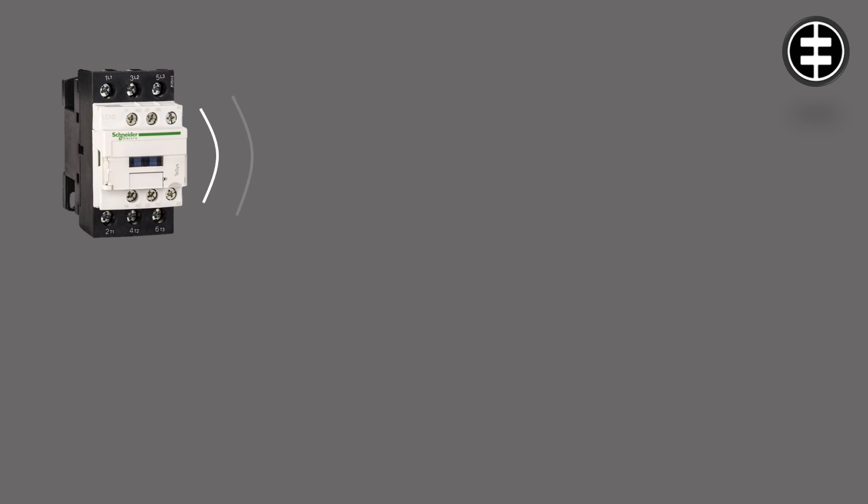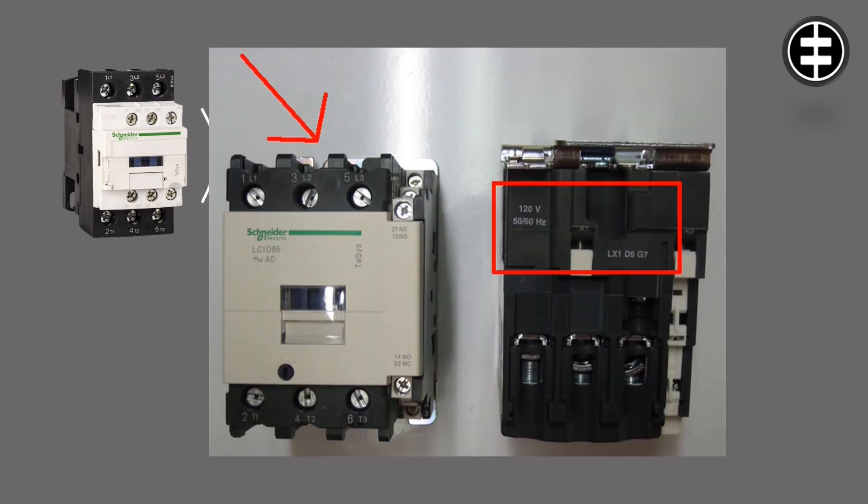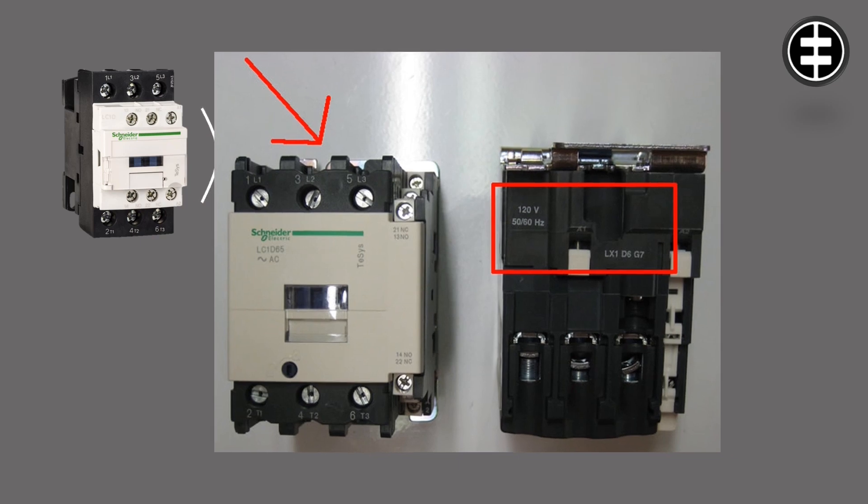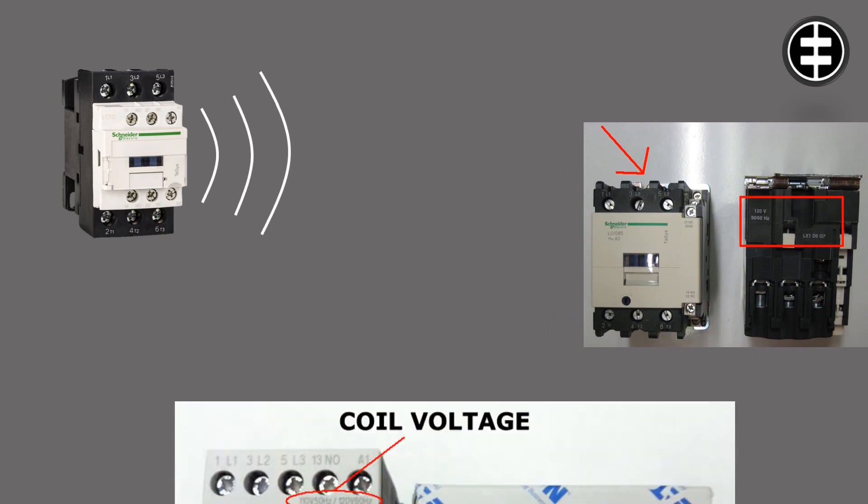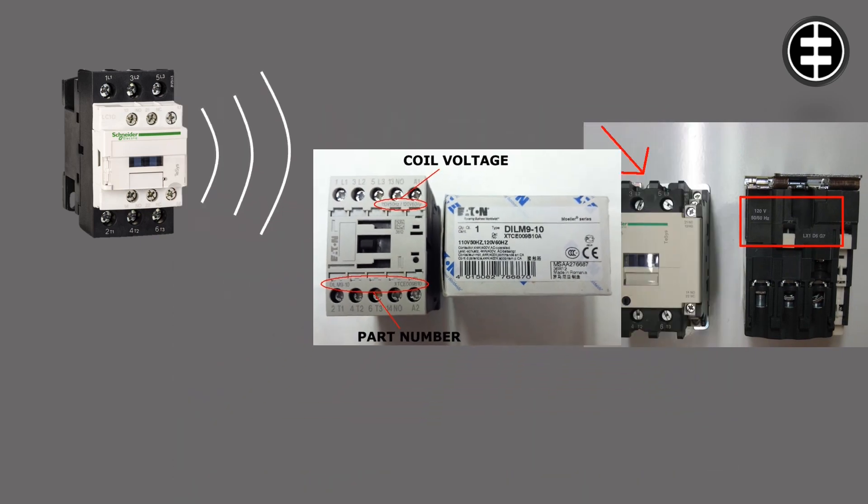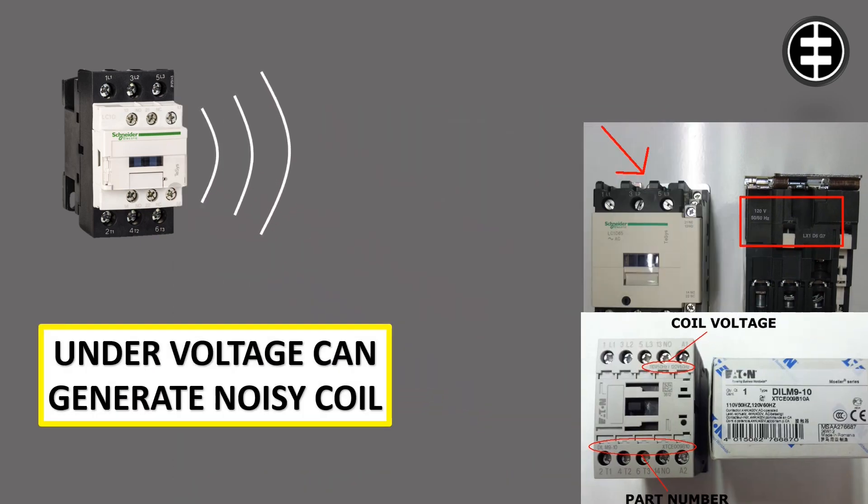If the contactor is humming and noisy, it is a sign that you have a problem. Check your contactor nominal coil voltage, normally written between A1 and A2 terminals or the front side of the contactor. Under voltage can generate noisy coil.